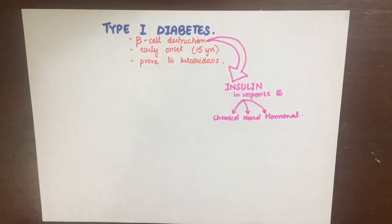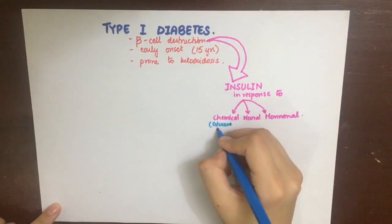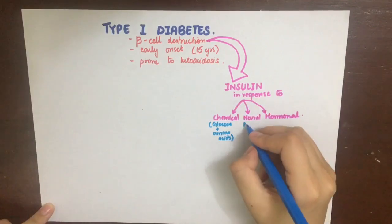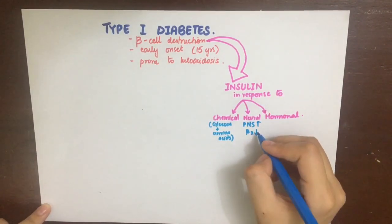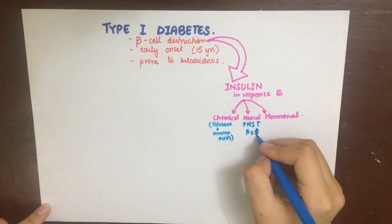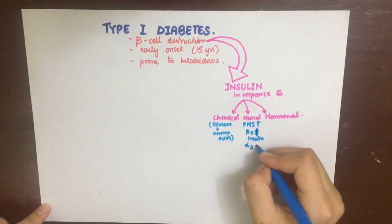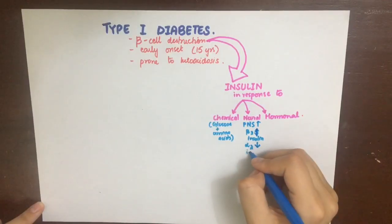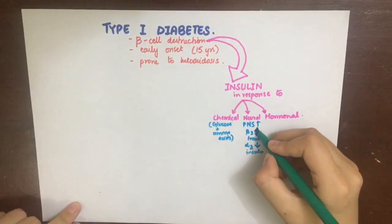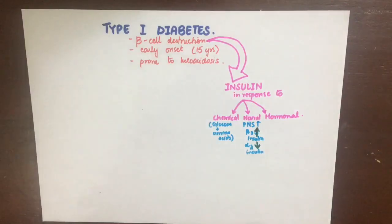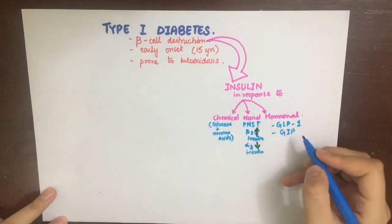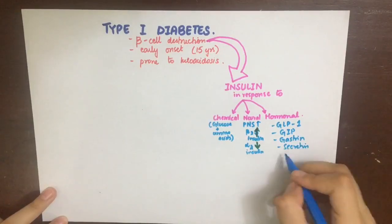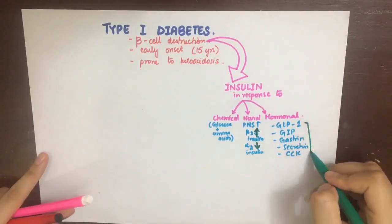The chemical stimulus is given by glucose and amino acid levels in the blood after we eat. The neural stimulus is by the parasympathetic nervous system, which increases insulin release, while the sympathetic nervous system beta-2 receptors will also increase insulin release and alpha-2 receptors will decrease it. The hormonal stimulus includes glucagon-like peptide 1, gastrointestinal inhibitory peptide, gastrin, secretin, and cholecystokinin, all of which increase insulin secretion.